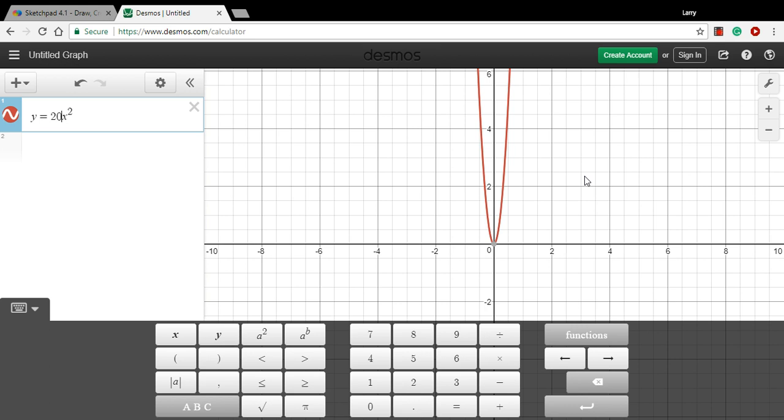By 100, even narrower. So the bigger the number here, the narrower it's going to get. And of course, if it's negative and a big number, it's narrow and it's upside down.